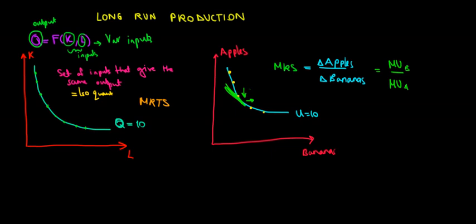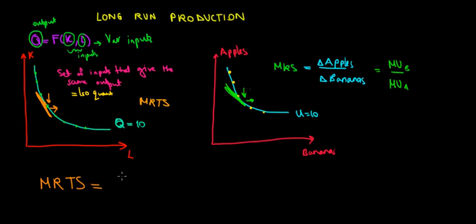With the same logic, we can apply this to the marginal rate of technical substitution. The marginal rate of technical substitution is the willingness to exchange labor for capital. In other words, how much capital do we have to give up? It's going to be a slope — a derivative, a rate of change — how much capital do we have to give up to get one more unit of labor while keeping the same level of production, say 10 cars.